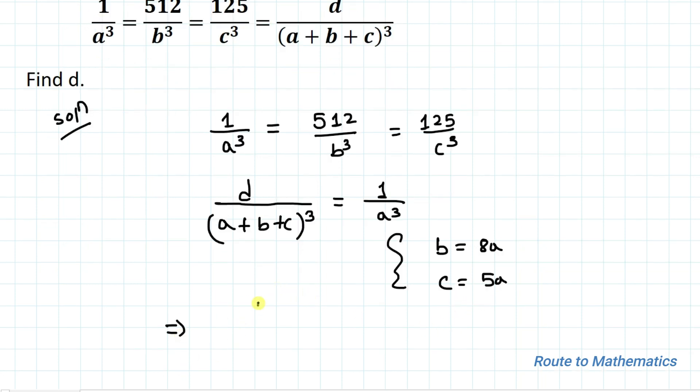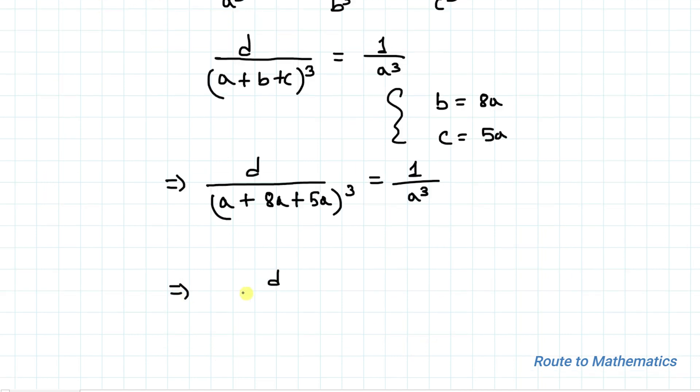In this equation, we have d/(a + b + c)³ = 1/a³. Substituting, we get d/(a + 8a + 5a)³ = 1/a³.